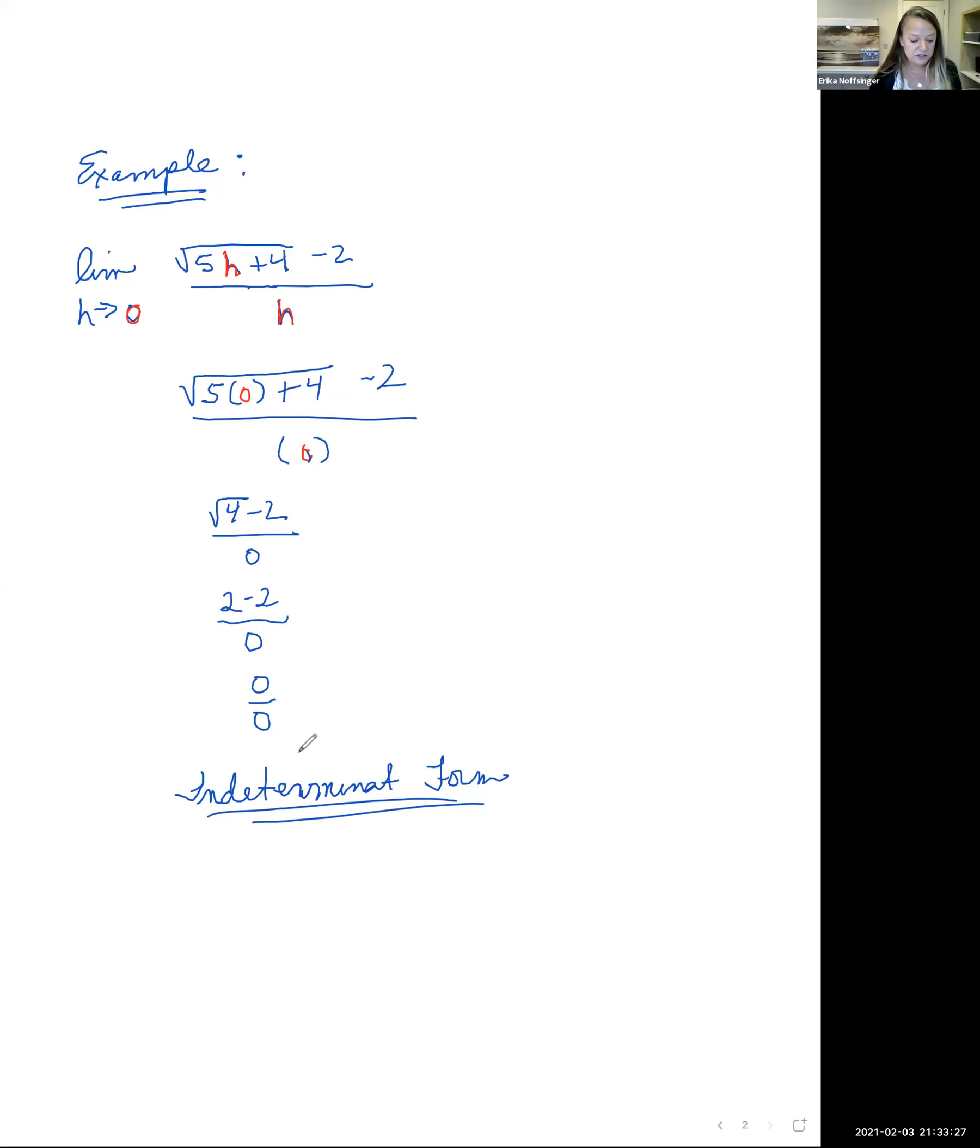So this is where we had to go back to our limit and we had to manipulate it some way. This doesn't factor, I see a radical in this quotient, and so we're going to try by rationalizing this numerator.